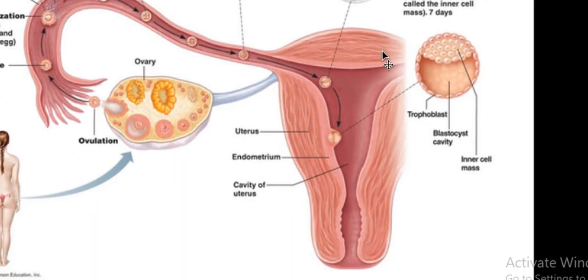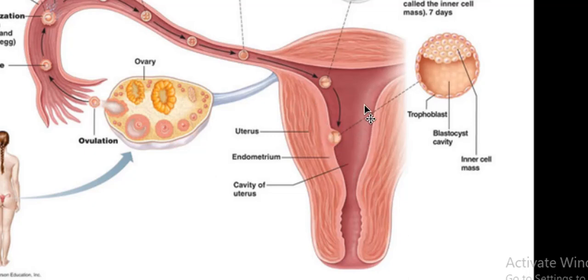That ball of cells makes its way into the uterus, where it implants itself into the uterine lining — this is where development takes place. The structure called a blastula eventually becomes a gastrula, then turns into an embryo, then a fetus, and then that fetus is born.